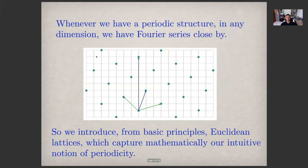Whenever we have a periodic structure, the Fourier series are close by because that's how Fourier series behave, and we will study them from first principles. And now in two dimensions, we have this picture, for example, of a two-dimensional lattice. We have two different bases here, this blue one and this green one, and we will introduce Euclidean analysis also from first principles because they capture intuitively the notion of periodicity in Euclidean space.